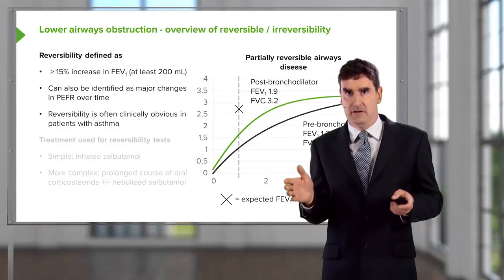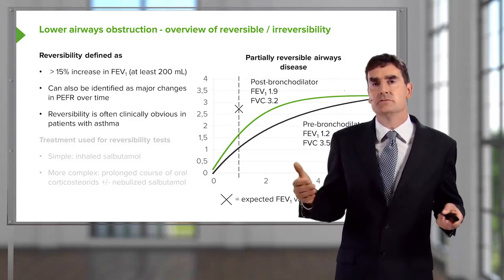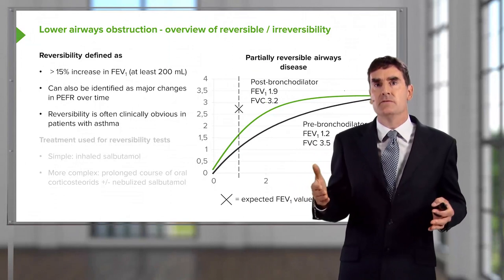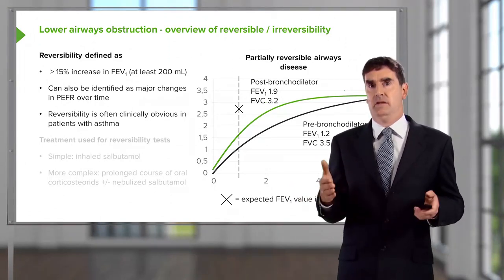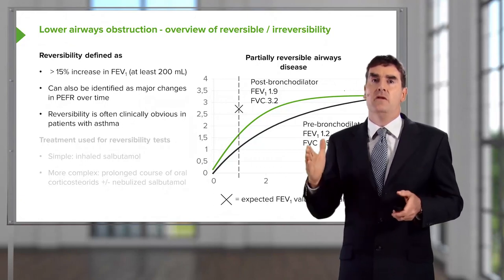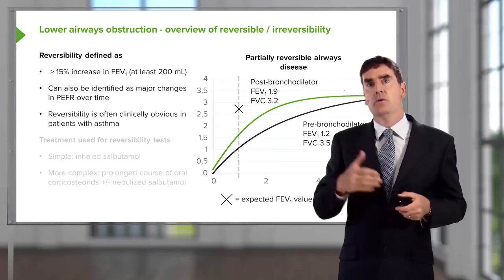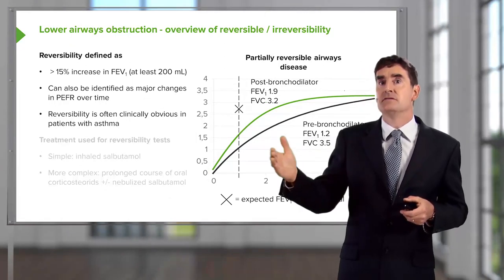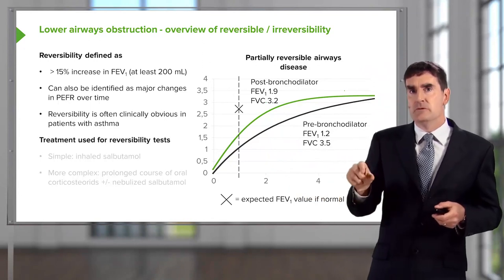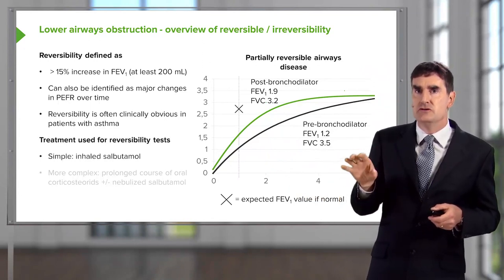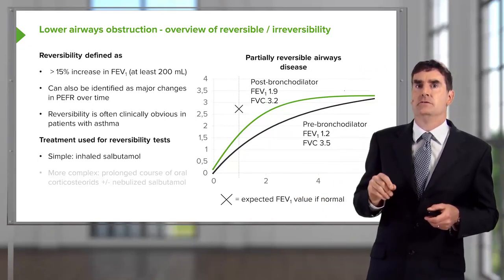Reversibility in asthma is often clinically very obvious. The patient may come into hospital with an exacerbation, be terribly breathless, and then two weeks later be back running their five kilometers a day. That clearly shows somebody who has an airways disease which can be very severe — they end up in hospital — but when they're well, it can actually allow them to function at a very high level.